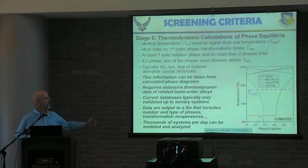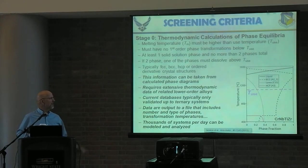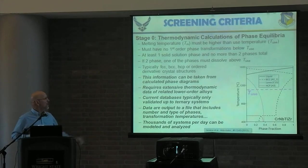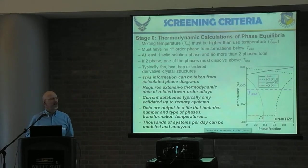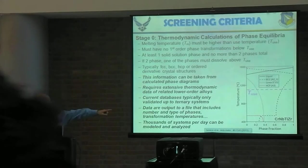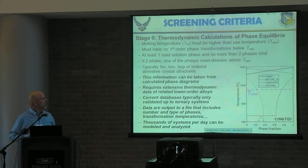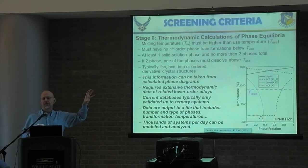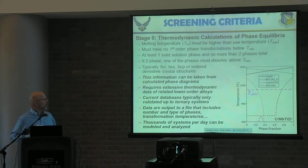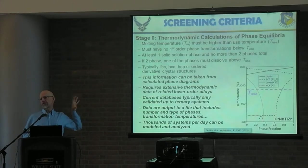We can use data extracted from this calculation to interrogate whether the alloy would be useful as a structural material. Even if you're not a material scientist, you'll get this. The melting temperature has to be above your use temperature — we don't want our blades melting. There should be no phase transformation below the use temperature — you don't want properties changing while you're using it. This alloy would fail that criterion because of the phase transformation at about 500°C. If it's two-phase, you'd like to be able to dissolve one phase above use temperature for microstructural control. We look for FCC, BCC, or HCP structures or their derivatives.